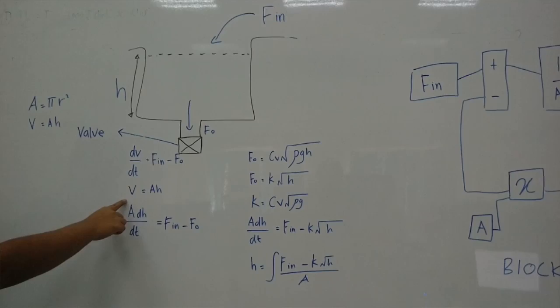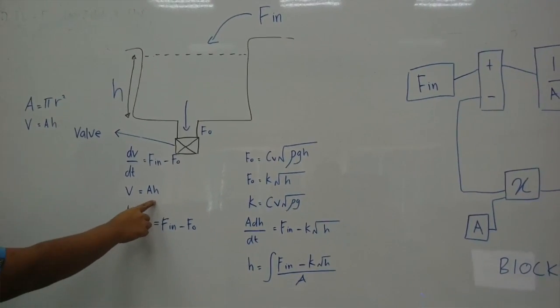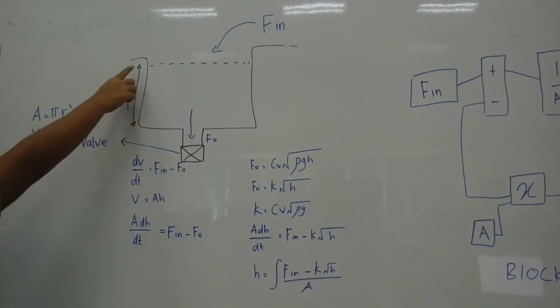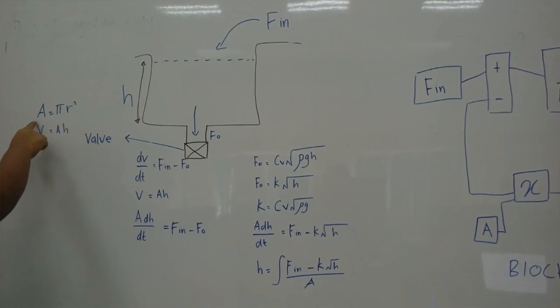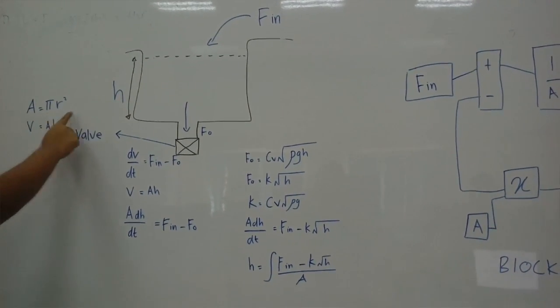To find the volume, A times h. h is the height of the tank, A is the area. Area is pi r squared, which is the circle.